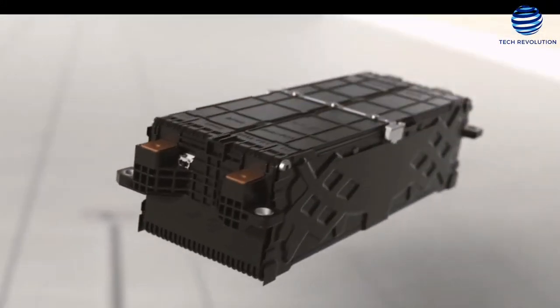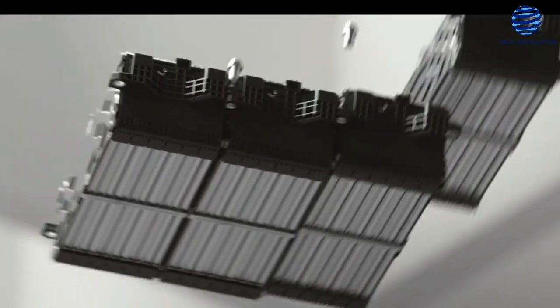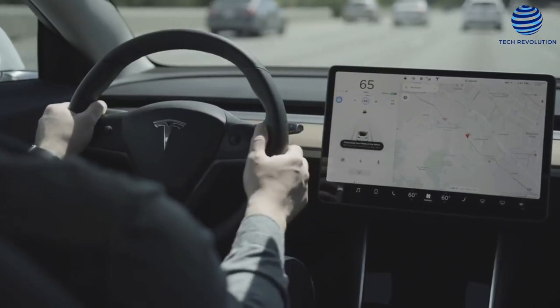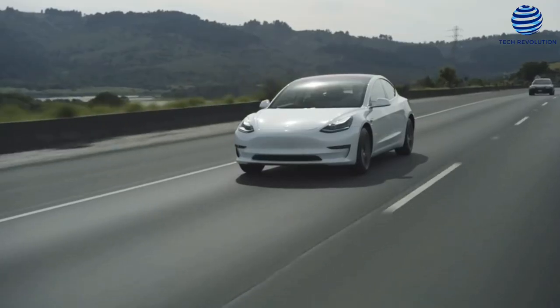According to Elon Musk, battery modules are the primary limiting factor in the life of an electric car. In 2019, he stated that the Tesla Model 3 drive unit is rated for 1 million miles, but the battery isn't.